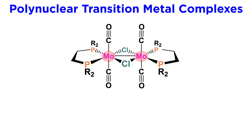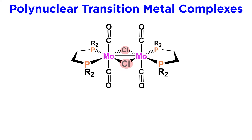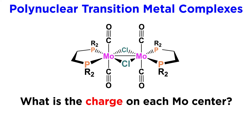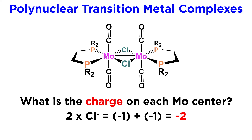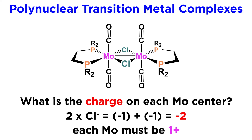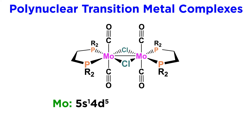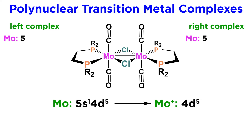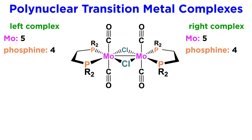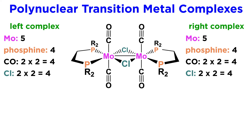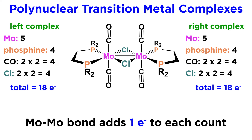Here is one such situation. We have two molybdenum centers, each of which is coordinated to two carbonyls, one bidentate diphosphine ligand, and two bridging chlorines. When determining the charge on the metal centers, we must be careful. Apart from the neutral ligands, the bridging chlorines have a negative charge, just as we would expect when coordinated to only one metal, but the two negative charges are distributed amongst two metal centers. This means that each metal must have a plus one charge to balance things out and get to neutral charge overall. Molybdenum is 5s¹4d⁵, so the plus one cation will be 4d⁵, thereby contributing five electrons to the count. The bidentate phosphine contributes four electrons, two per phosphorus. The carbonyls contribute two electrons each, as do the bridging chlorines, as they each contribute two electrons to each metal. That adds up to 17 electrons for each molybdenum center, so we simply add one covalent bond between the two metals to bump the total up to 18.